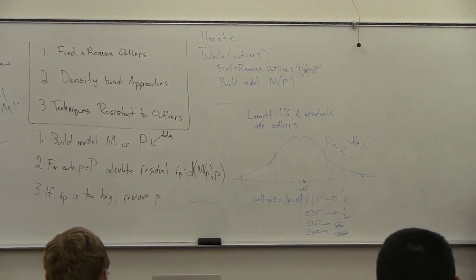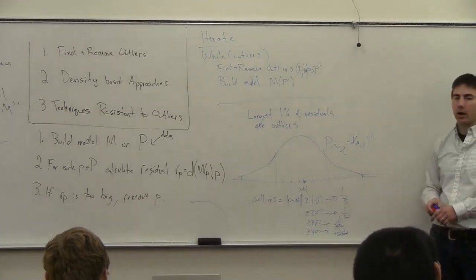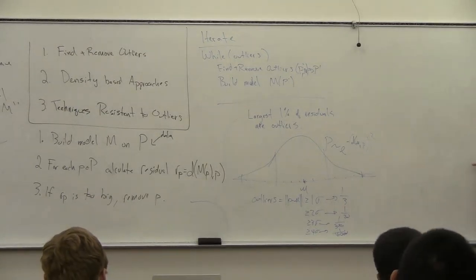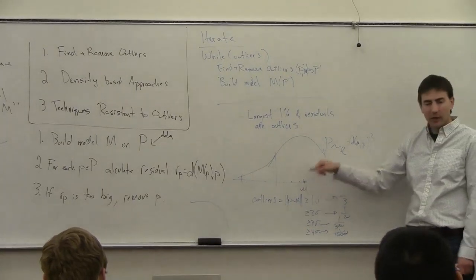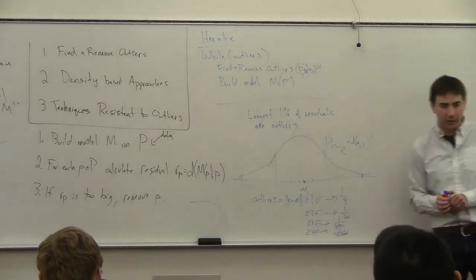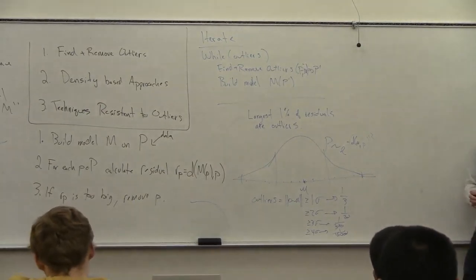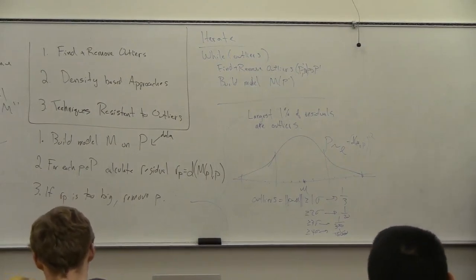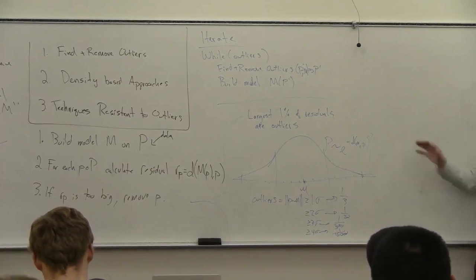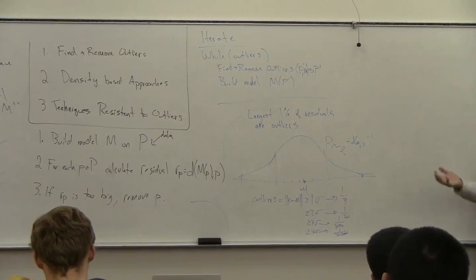And you can do things where you actually fit the best Gaussian to the data. I'm not going to go over these techniques, but you can do that. And that will actually be more robust to this outlier. Even though you have an outlier, if you chose the mean to be here, it's going to give you a better fit. And there are ways of smoothing your data with kernels, which I'll talk about in a bit, which will help you think about these ways more robustly.